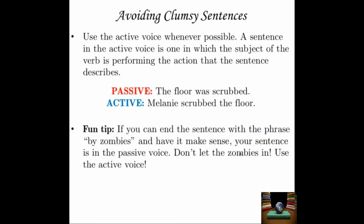Here's how to avoid clumsy sentences. First thing to do: use the active voice whenever possible. A sentence in the active voice is one in which the subject of the verb is performing the action that the sentence describes. For example, this is the passive voice: 'The floor was scrubbed.' The subject is 'floor,' the verb is 'was scrubbed,' but the floor isn't doing the scrubbing — it's receiving the scrubbing. So it's in the passive voice.